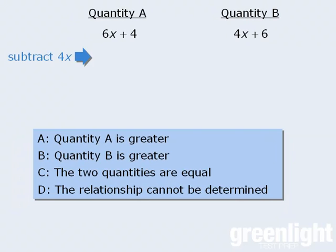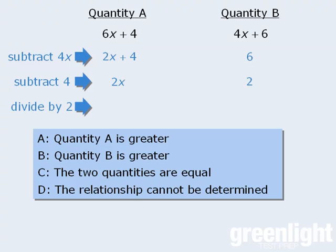So we might begin by subtracting 4x from both quantities to get this, then we can subtract 4 from both quantities to get this, and finally divide both sides by 2 to get this. At this point, we're comparing x with 1. And since x can be less than 1, greater than 1, or equal to 1, it's clear that the answer here is d.